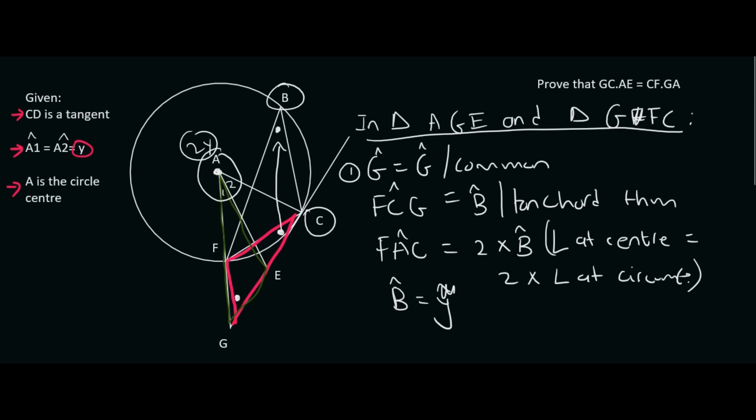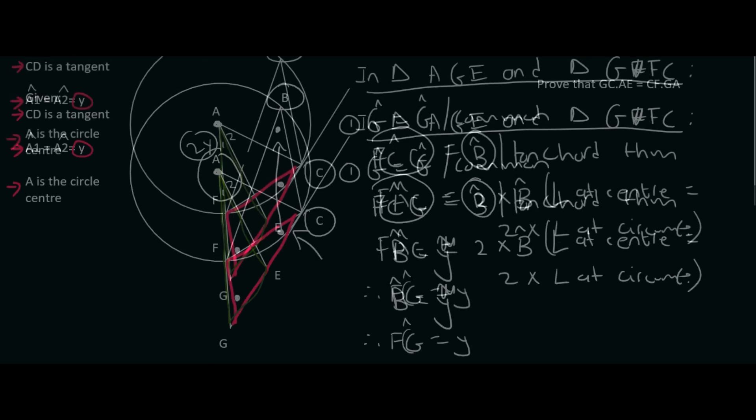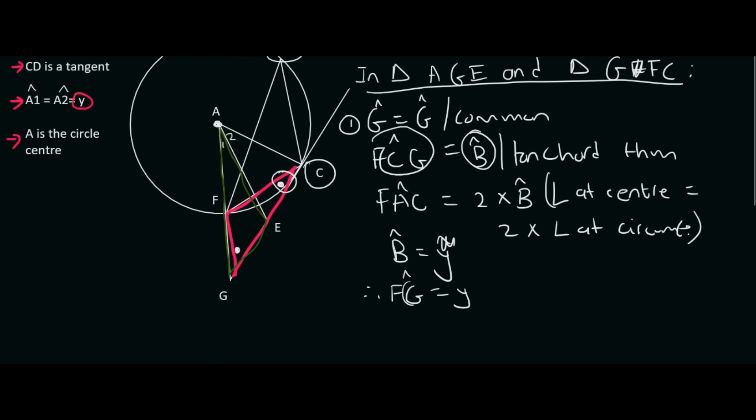So angle B is equal to Y. But then a few lines ago, we said that angle FCG, which is this one here, is equal to angle B. Which means, therefore, that FCG, which we said was equal to angle B, is going to be equal to Y, because we've just proved that B is equal to Y. So the whole goal of that was to prove that this is equal to Y. But A1 is also equal to Y. So there we've just proved two different angles, in the pink and the green triangle. So we can therefore say that angle FCG is going to be equal to angle A1, because they are both equal to Y. So that's our second reason.